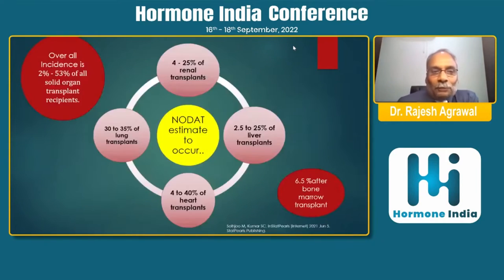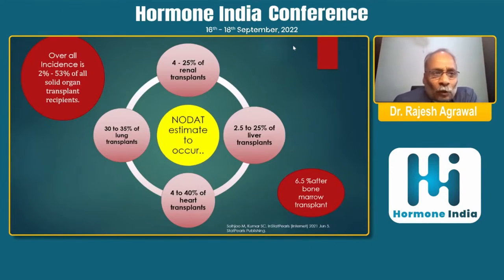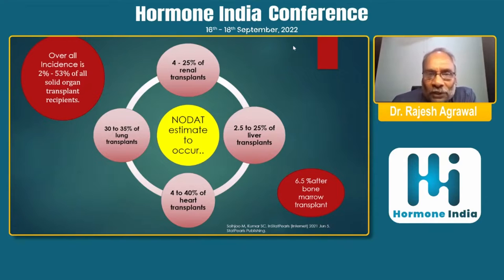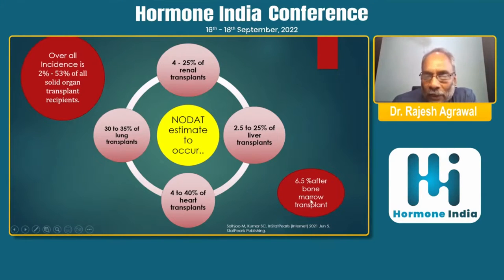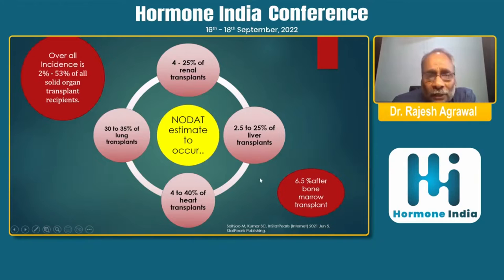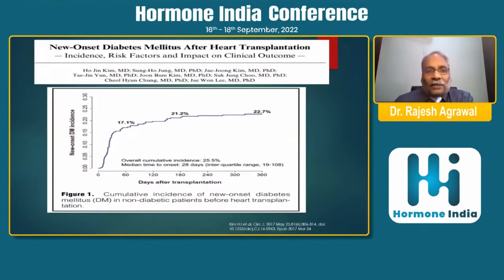The overall incidence of NODAT is 2–53% of all solid organ transplantations, up to 25% in renal and liver transplant, and 30–40% in lung and heart transplant. The incidence is much less — below 10% — in bone marrow transplant. The range depends on various factors like age, population studied, and other variables.